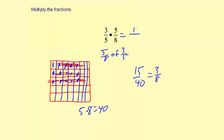See, 3 times 5 is 15. 5 times 8 is 40. So you have 15 fortieths, which reduces to 3 eighths.